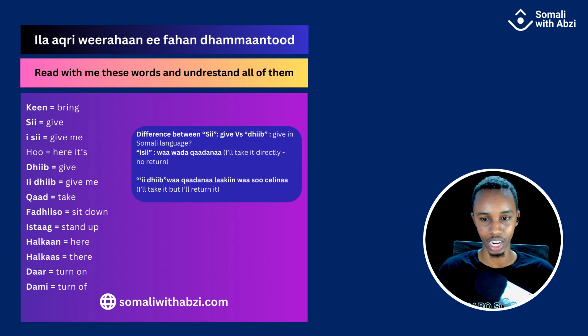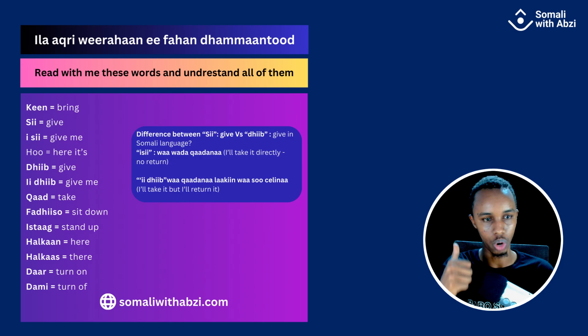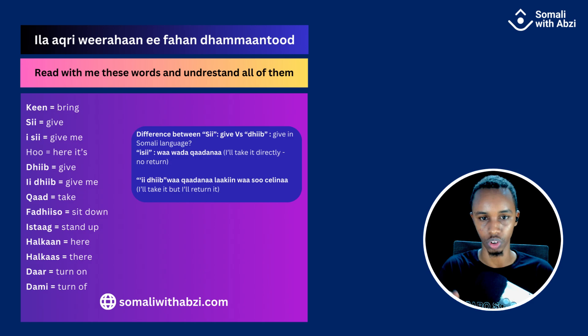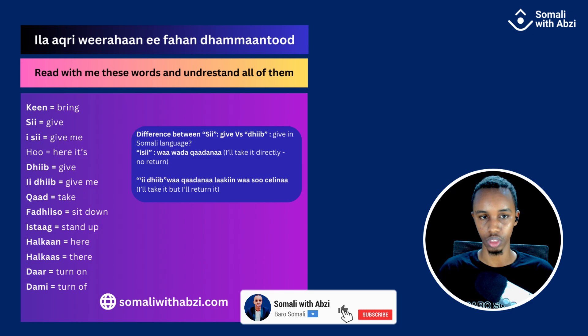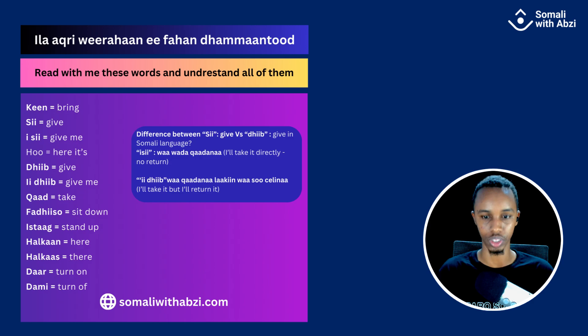And what about 'e-deeb'? E-deeb means I will take it but I will return it to you. For example, I can say 'e-deeb mobilkaaga' — give me your mobile, I'm going to call somebody. That means it's not my mobile, so I'm going to give it back. You cannot say 'isi mobilka' because you don't own the mobile. You have to say 'e-deeb' — I'm going to return it. So that's the main difference: 'isi' means I take it with no return; 'e-deeb' means the thing is not mine, so I'm going to give it back.